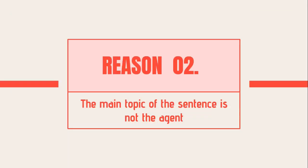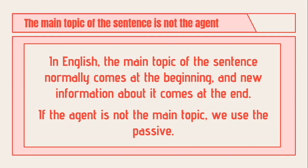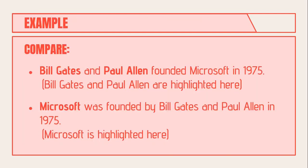The second reason is when the main topic of the sentence is not the agent. In English, the main topic normally comes at the beginning of the sentence. Let's compare two sentences: 'Bill Gates and Paul Allen founded Microsoft in 1975' — here Bill Gates and Paul Allen are highlighted. But 'Microsoft was founded by Bill Gates and Paul Allen in 1975' — here Microsoft is highlighted, so our focus is on Microsoft, not on those who founded it.